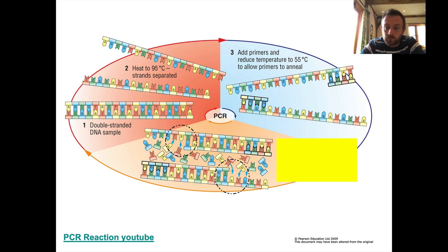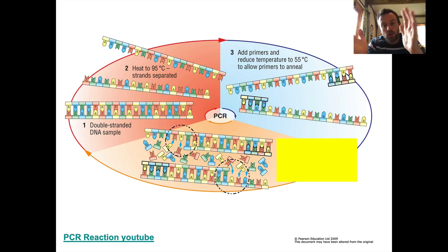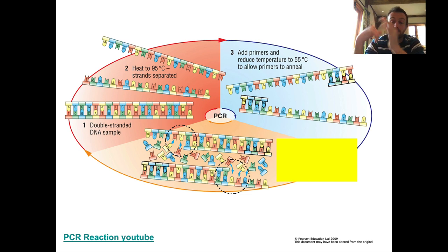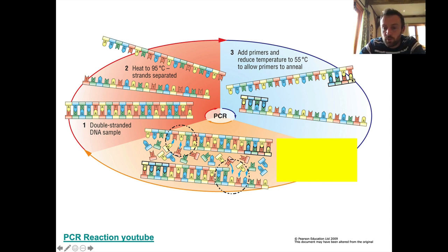Before we can actually copy these single strands, we need to add some primers — short strands of nucleotides that bind to the DNA we want to copy. We cool it down to about 55°C to allow these primers to stick to those strands. We call that annealing: hydrogen bonds form between the primer and the DNA strand, so now the primers are attached to the sequences of DNA we want to copy.